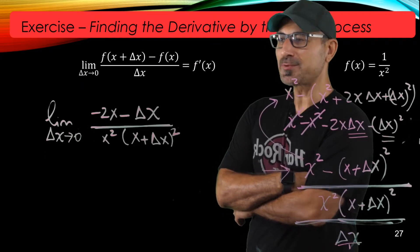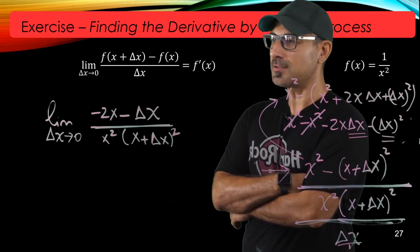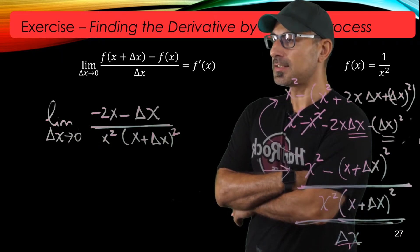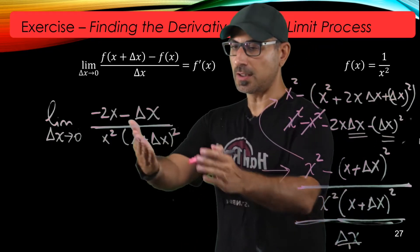All right, for this limit we're going to use our skill that we developed in chapter 2. We're just going to substitute 0 for delta x to see if this limit is going to make some sense.